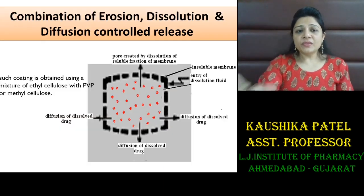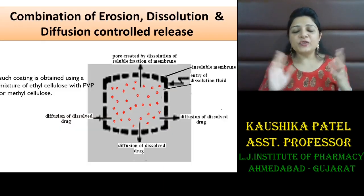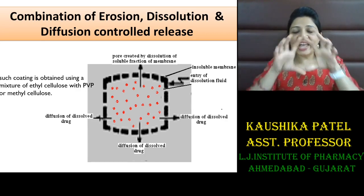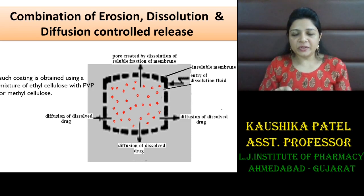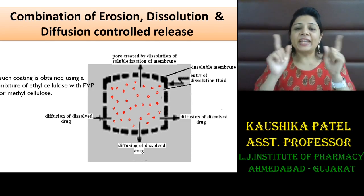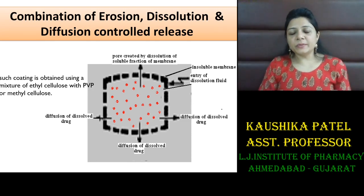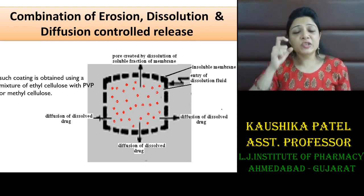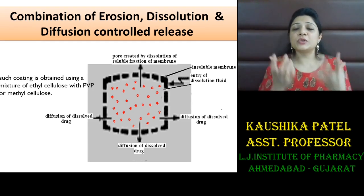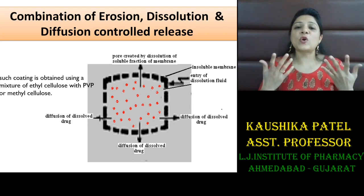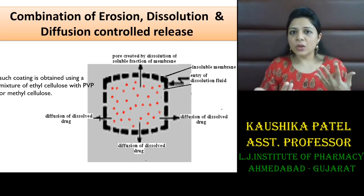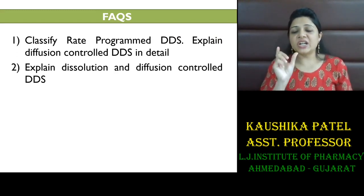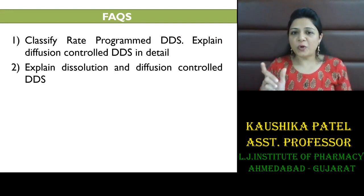All three mechanisms or either of them can be used in combination. You can have a matrix of drug and polymer, and then coat it again with a polymer — so there is control of diffusion, control of dissolution, and if you use an erodible polymer, control of erosion as well. These are the different approaches which can be used to formulate a controlled release dosage form.